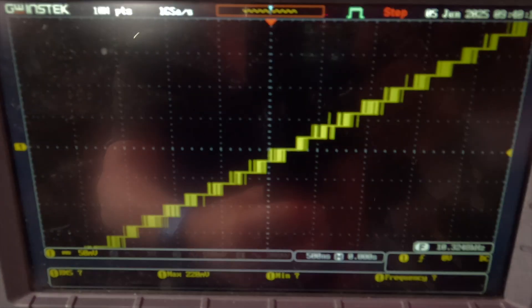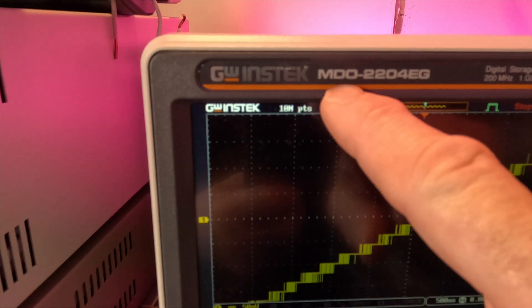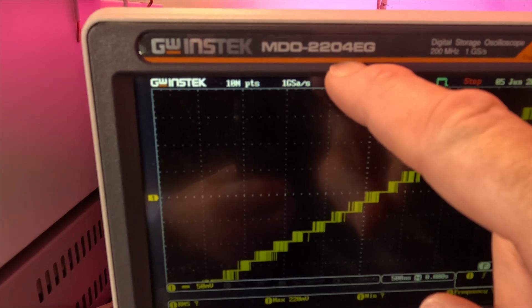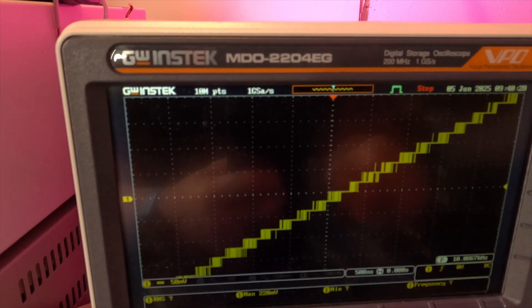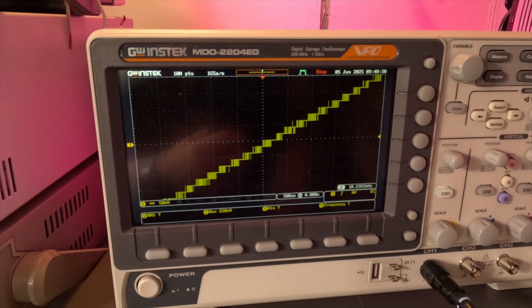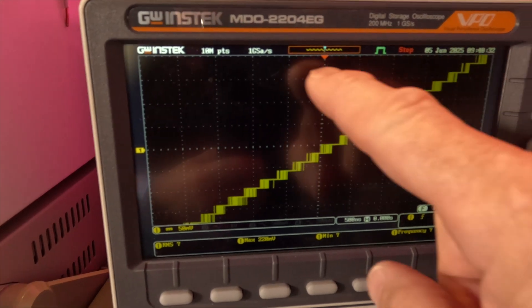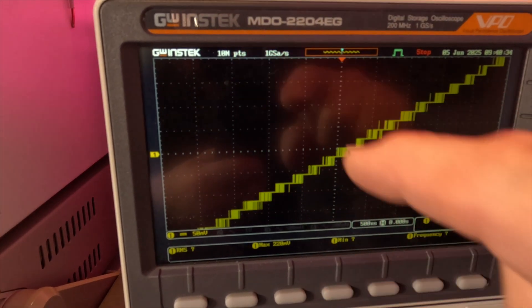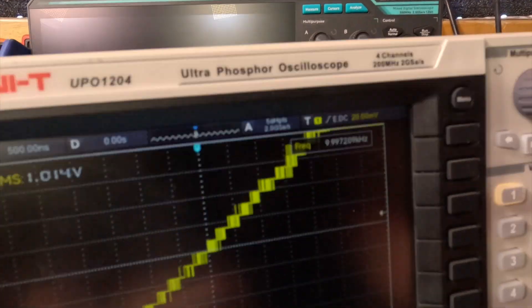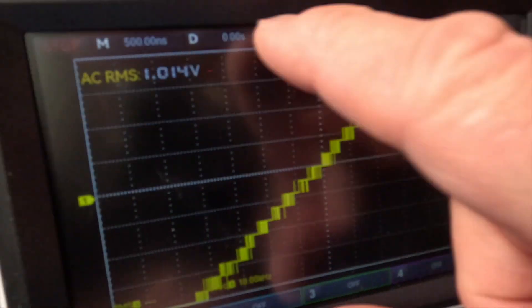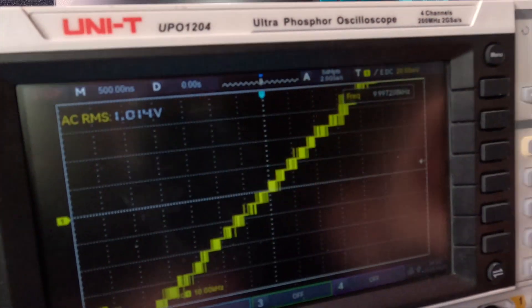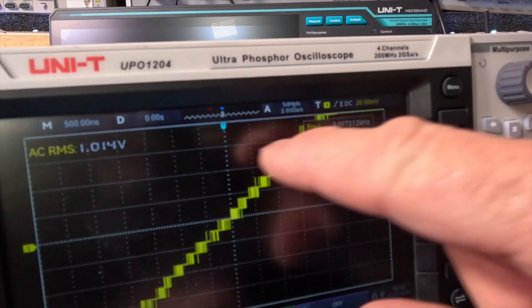And there's that one, the GW Instek. This is the MDO 2204EG, so 200 meg scope. And by the way, I've got all the memories maxed out, 10 mega points on this one. That doesn't really matter because that has to do with the deep memory, but just to let you know I maxed them out on all of them.